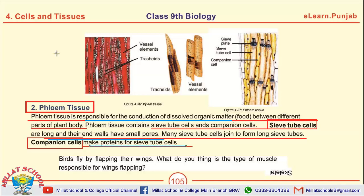All the plant tissues may also be selected as a long question in the examination. Dear students, we have discussed today the plant tissues, which is the ending topic of Chapter number 4: Cells and Tissues. Next time we shall discuss Chapter number 5, Inshallah. Till then, Allah Hafiz.